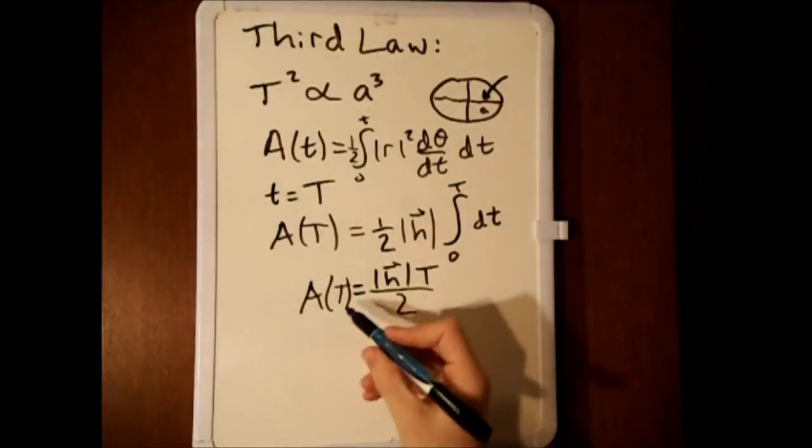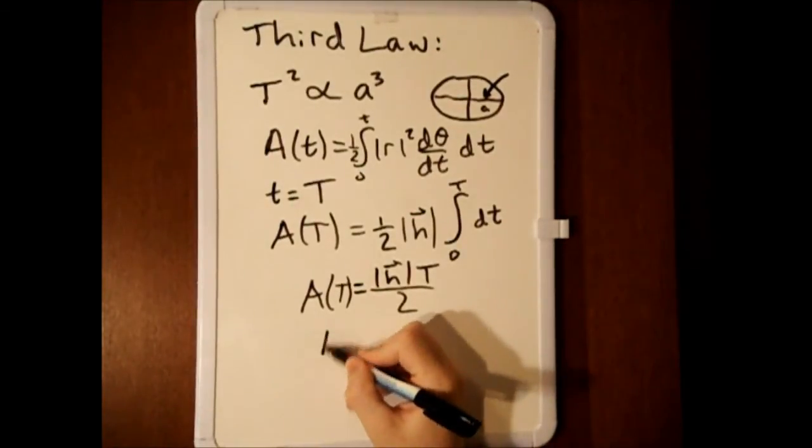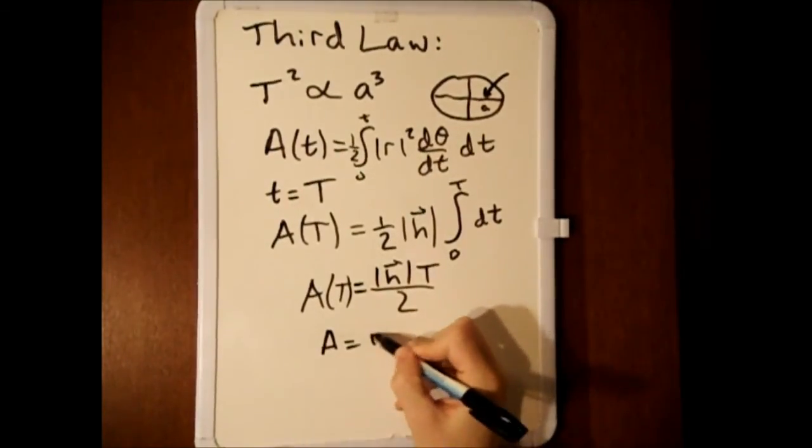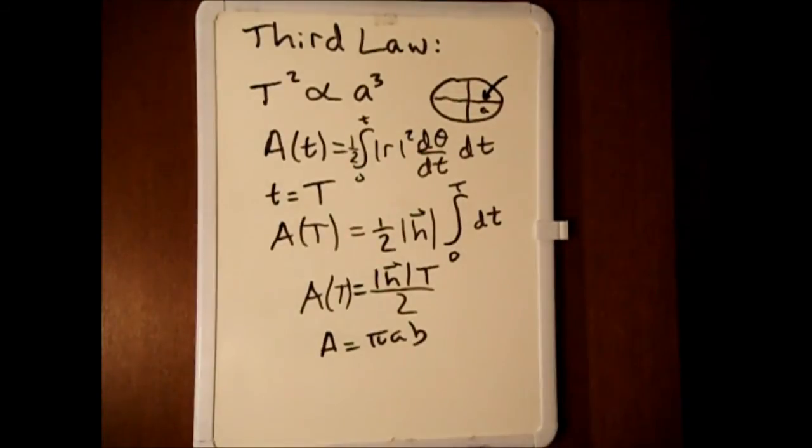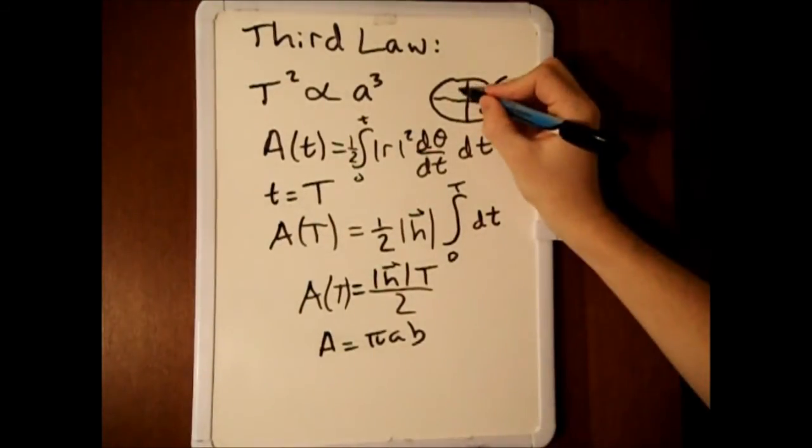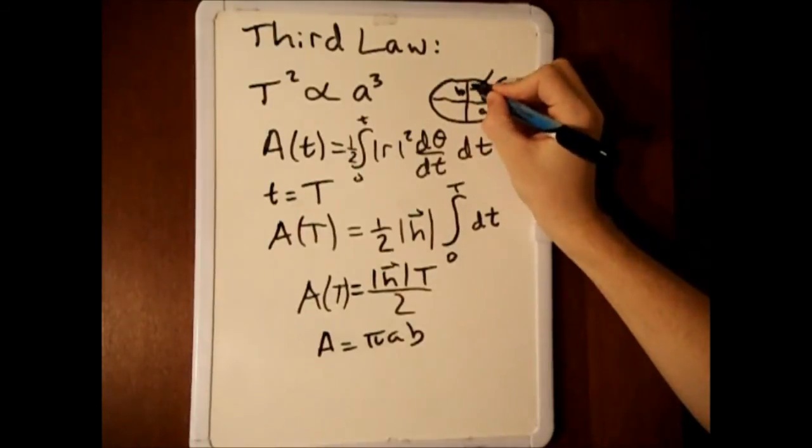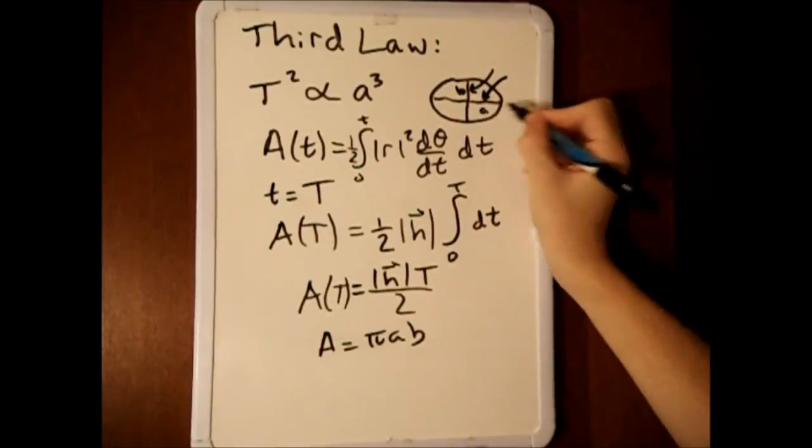The area of an ellipse is given by A equals pi ab, where b is the length of the semi-minor axis and a is the length of the semi-major axis.